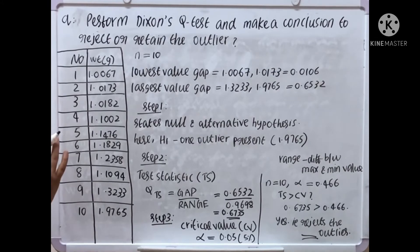Next, we have to perform the Dixon Q test. Some steps are here. Step 1: State null and alternative hypothesis.